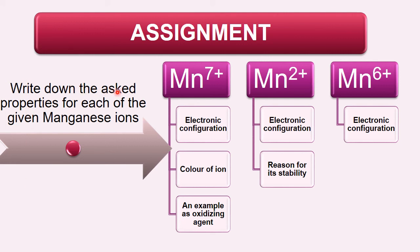Assignment: Write down the asked properties for each of the given manganese ions. For manganese +7, write down the electronic configuration, color of the ion, and an example as an oxidizing agent. For manganese +2 ions, write down the electronic configuration and the reason for its stability. For manganese +6 ions, write down the electronic configuration. Thank you.